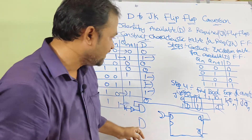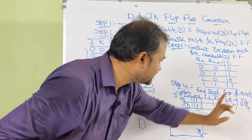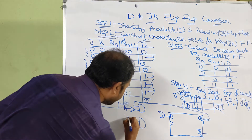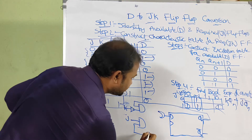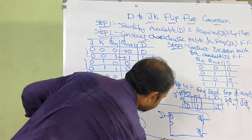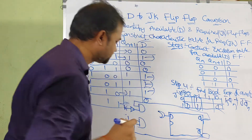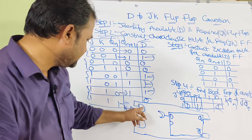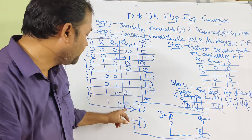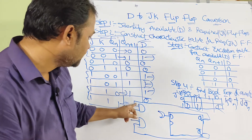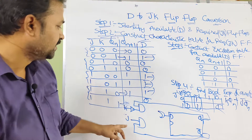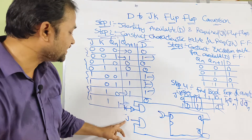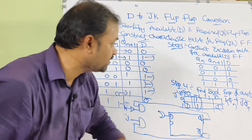The second AND gate implements JQ̄n: the inputs are J and Q̄n. So this AND gate has inputs J and Q̄n.